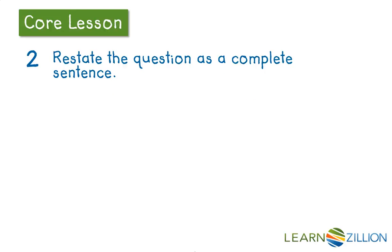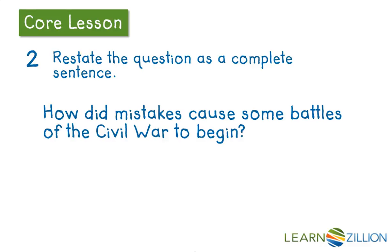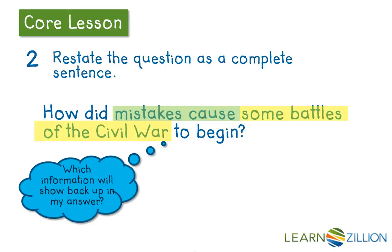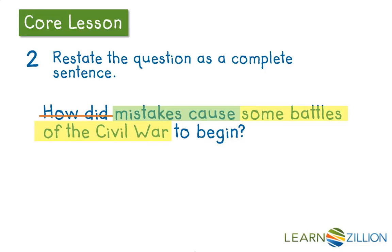The second step is to restate the question as a complete sentence. I'm going to take a look again at my research question: how did mistakes cause some battles of the Civil War to begin? I'm asking myself which information will show back up in my answer. I know that I want some battles of the Civil War to be in my answer, and I also want to talk about the mistakes and how mistakes caused some battles. I also know that I don't want my statement to be a question, so I can cross off the question words and the question mark because it's no longer a question — it's a statement.